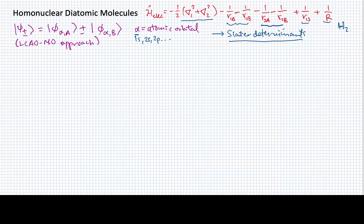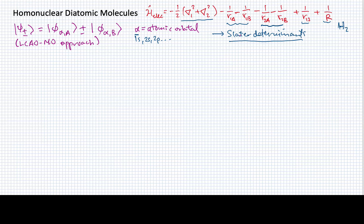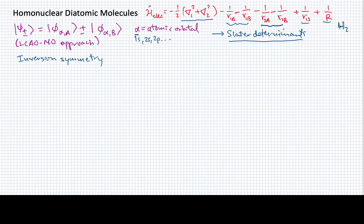What we're going to be more interested in is what the quantum states mean for these molecules. One of the first things we want to look at is something having to do with their symmetry — specifically, the inversion symmetry of the orbitals that are formed in a diatomic molecule.